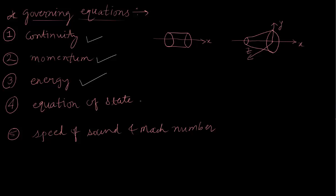The fourth one is the equation of state, which is p equals rho times r times T, and this is for an ideal gas. The fifth one is the speed of sound, which is denoted by small 'a', and Mach number, which is denoted by capital M.